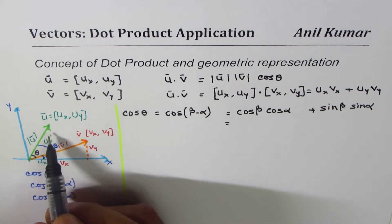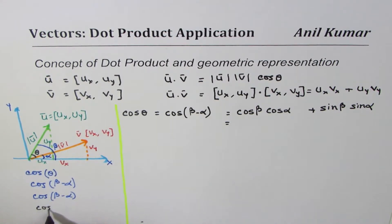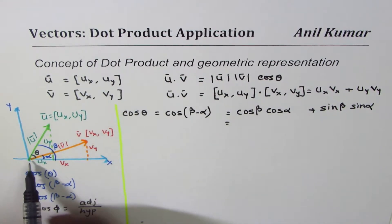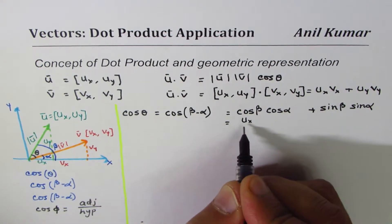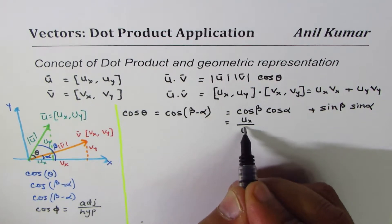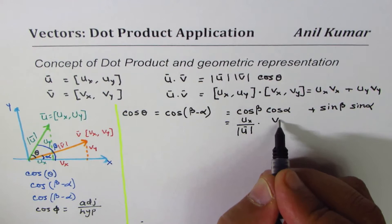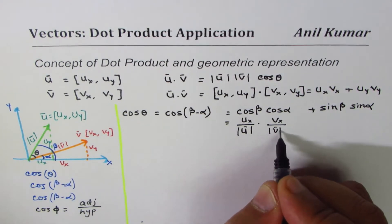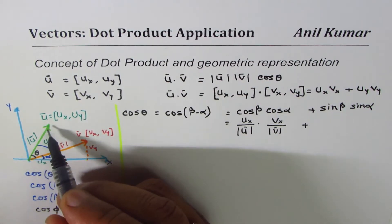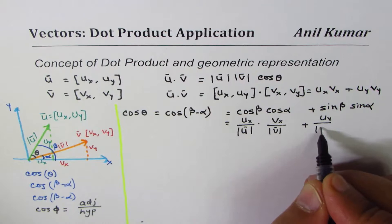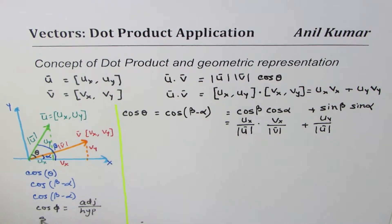Now, what is cos beta? Looking at the triangle for vector u: cosine of any angle equals adjacent side over hypotenuse. So cos beta equals ux over the magnitude of vector u. And cos alpha for vector v: the adjacent side is vx, so cos alpha equals vx over the magnitude of v. Then sin beta: the opposite side is uy, so sin beta equals uy over the magnitude of u.